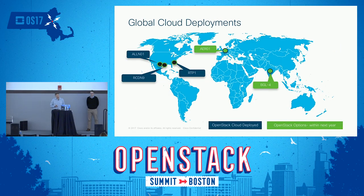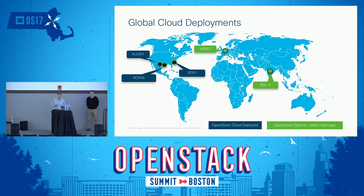Here are the locations of our current data centers. We have around 3,600 VMs in our Allen, Texas data center, around 400 VMs in our Richardson data center (also in Texas), and about 1,000 VMs in our Research Triangle Park, North Carolina data center — adding up to about 5,000 VMs. Applications grow and shrink their footprint as needed, but we hover around 5,000 today.